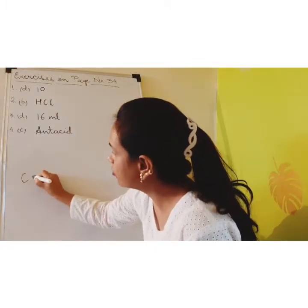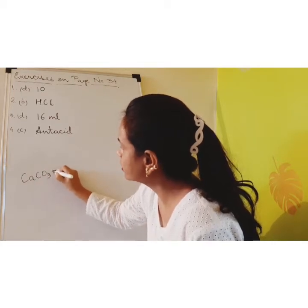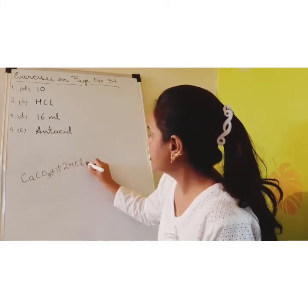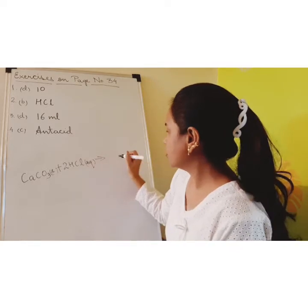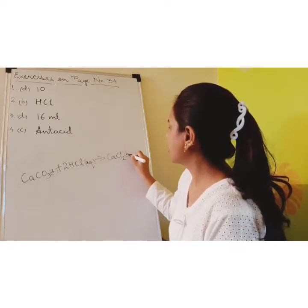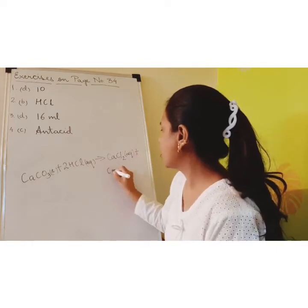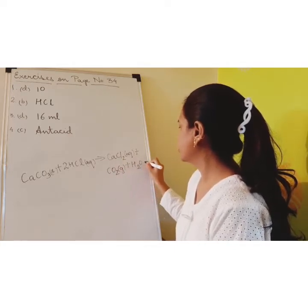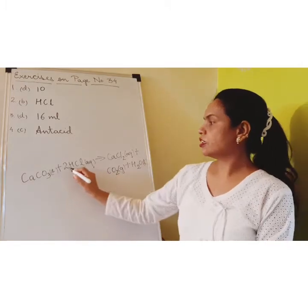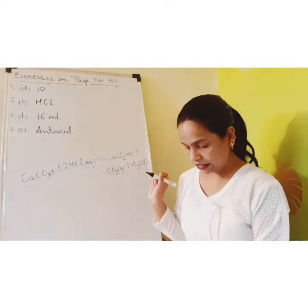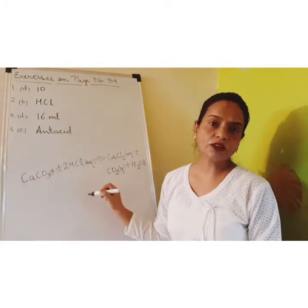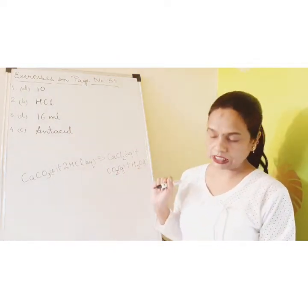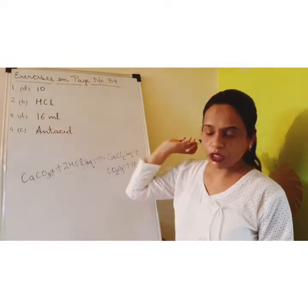Let's see the reaction. Calcium carbonate reacts with hydrochloric acid (aqueous) to form calcium chloride (aqueous), plus carbon dioxide, plus water. So the correct option is B, that is HCl. Calcium carbonate reacts with HCl to give carbon dioxide gas, which turns lime water milky.